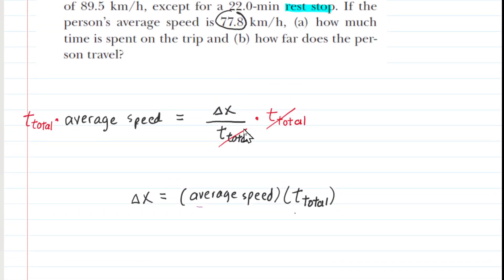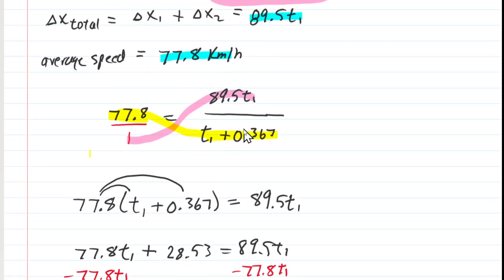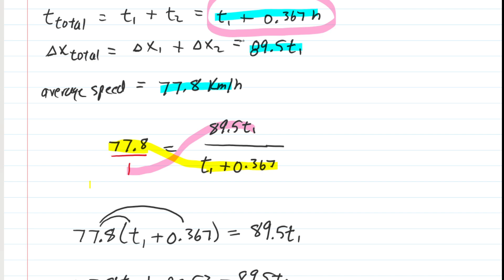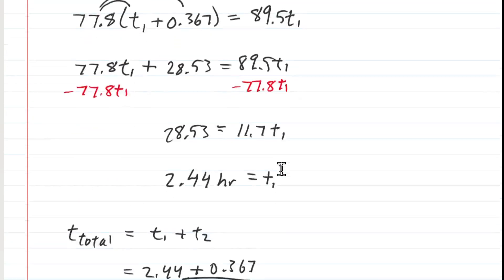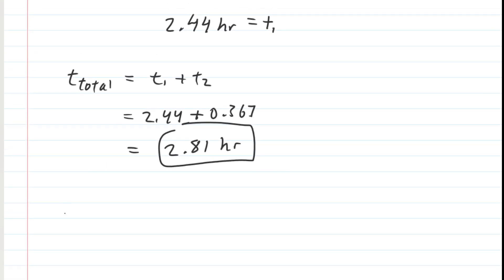And now for part B, how far does the person travel? So what they're asking for there is the total distance, the total distance traveled. Well, that's our delta x total. We can see that equaled 89 and a half times T1. So we're going to come down here and say that the delta x total, which was 89 and a half times T1, that would be 89 and a half times the T1 value, which works out to approximately 218. This is a distance and these speeds were measured in kilometers per hour. So we come out with kilometers as our unit for that total distance traveled during this journey. And that is the correct answer for parts A and B.